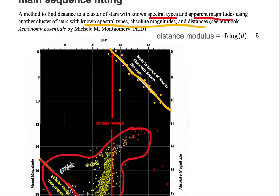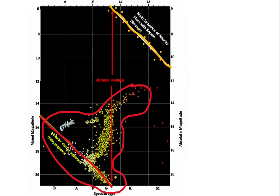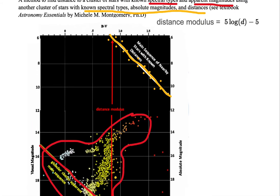Then we want to find what's called the distance modulus. It's the difference between the apparent magnitude of the unknown distance main sequence of stars and the absolute magnitude of the main sequence of stars with known distances.